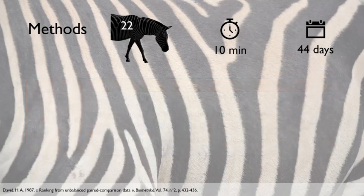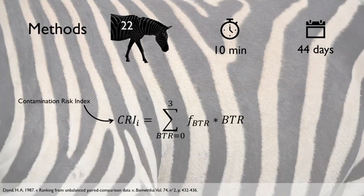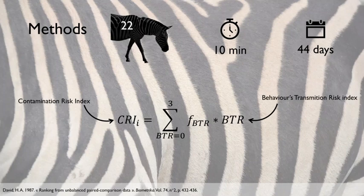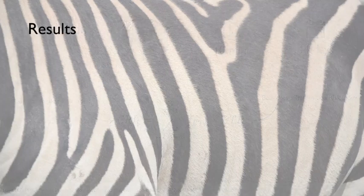All behaviors, including contact between the zebra's mouth and its environment, were used to calculate a contamination risk index. We designed it based on behavior frequency and an index from 0 to 3 attributed to each behavior, depending on the estimated risk of parasite transmission. Zebras were treated with anthelmintics against Strongyle parasites, so we divided the results into two parts: before and after treatment.